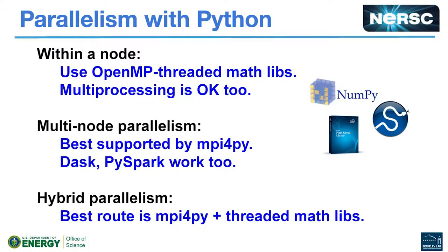People tend to use process-level parallelism in Python a lot because it's easier. Thread-level parallelism you can really only get by using a compiled library like C. Mostly people use MKL from NumPy, which is threaded and vectorized. Usually when people write Python, they use mpi4py, multiprocessing, Dask, or PySpark to get parallelism going — so you'll see flat MPI jobs with 68 MPI ranks on a KNL node.